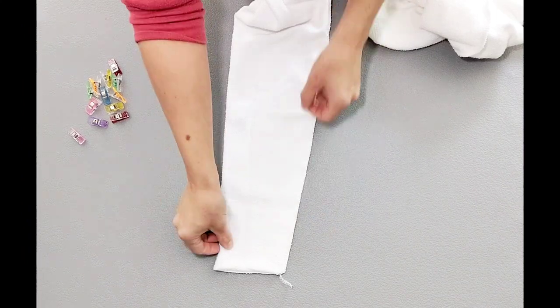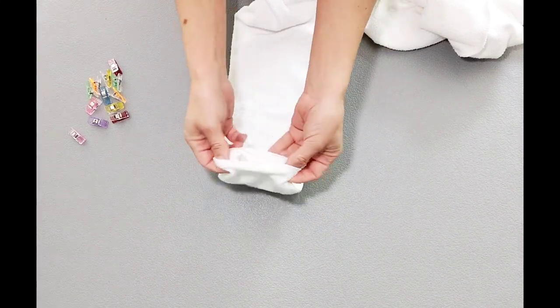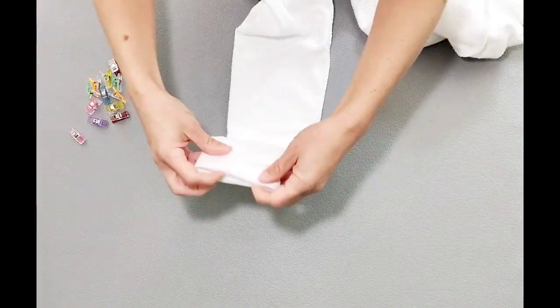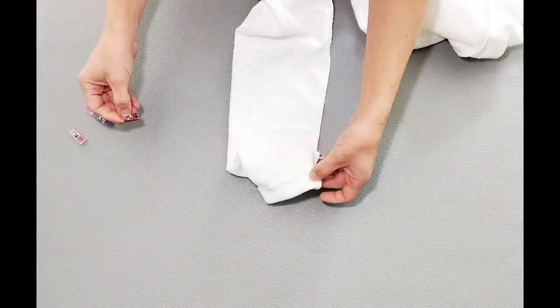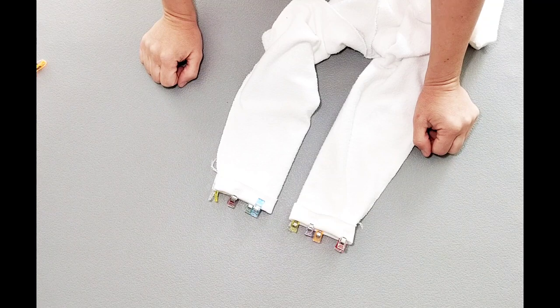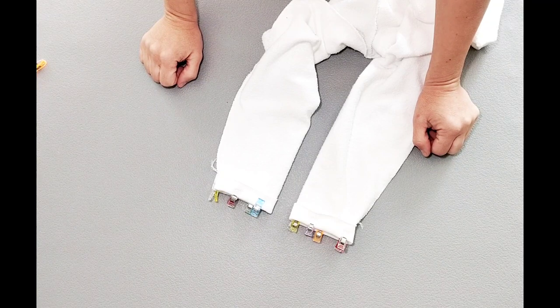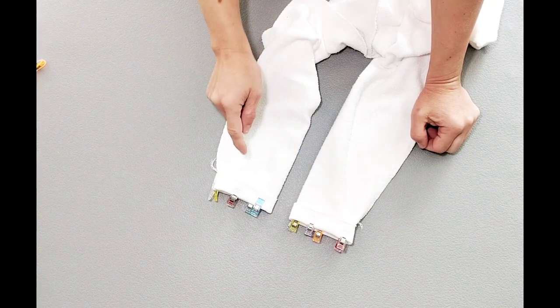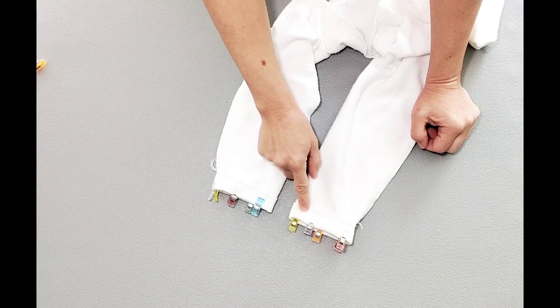To hem my sleeves, I'm going to fold them to the wrong side by about half an inch and clip in place. Using a zigzag stitch, a twin needle or your cover stitch machine, sew all around your sleeve hems close to the inner raw edge.